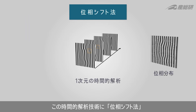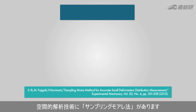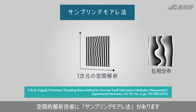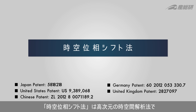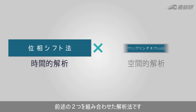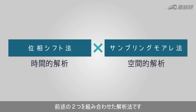The phase shifting method is used for phase analysis in the temporal domain. The sampling MOIR method is used for phase analysis in the spatial domain. The Spacio-Temporal Phase Shifting Method is a high-dimensional phase analysis technique that combines these two spatial and temporal methods.